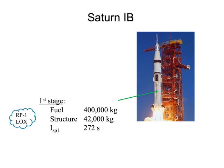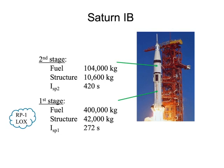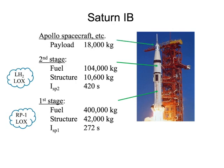The second stage has about 104,000 kilograms of fuel and a structure weighing about 10,600 kilograms. The fuel for this stage is liquid hydrogen and liquid oxygen — a much higher-performing but tricky-to-handle fuel because liquid hydrogen is so cold. It has a specific impulse of 420 seconds in vacuum, because by the time the second stage fires, you are above most of the atmosphere. The payload — including the Apollo spacecraft and launch escape mechanism — totals about 18,000 kilograms (18 metric tons).